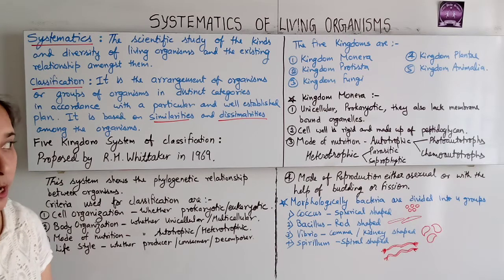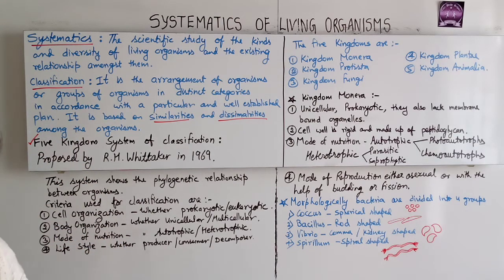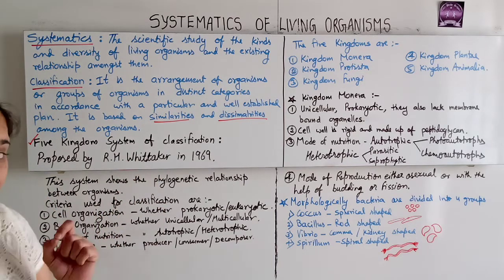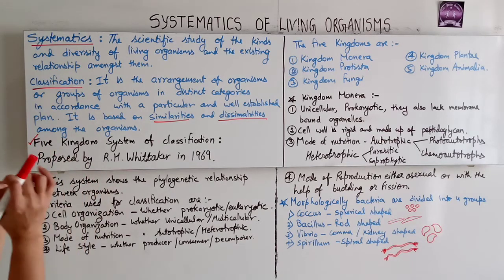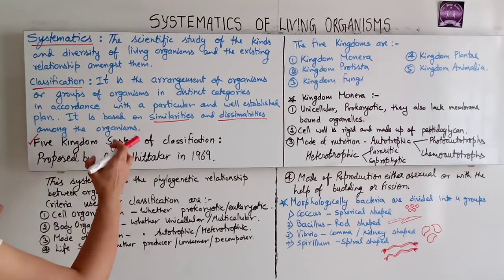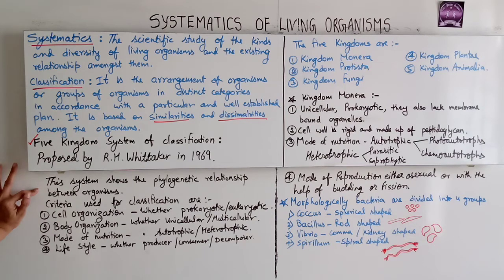Now we will study the Five Kingdoms System of Classification. This system was proposed by R.H. Whittaker in 1969. This Five Kingdoms System of Classification shows the phylogenetic relationship between the organisms.